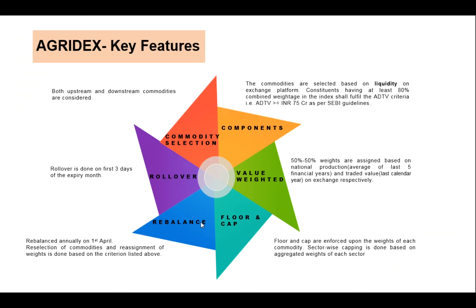Some key features: both upstream and downstream commodities are part of the index. Upstream and downstream means, for example, soybean and soy oil, or guar seed and guar gum. This is an index of overall commodities that meet our liquidity criteria. Part of the liquidity criteria is governed by SEBI and part by us. SEBI's guideline says that every component in the index should have at least 75 crores of ADTV for the past one year.